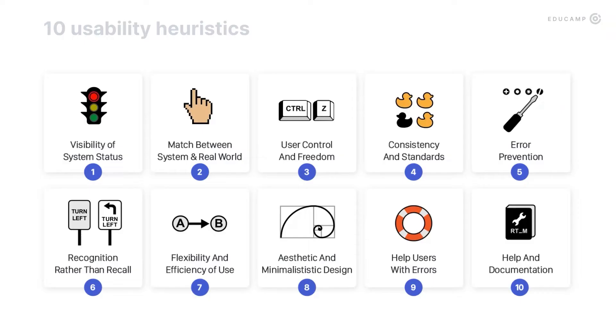In this video, we are going to discuss usability heuristics. It's 10 simple rules that will help you to significantly improve your interface. These heuristics were described by Jakob Nielsen 25 years ago, and till this day they remain the best simple usability checklist. So let's review them now.